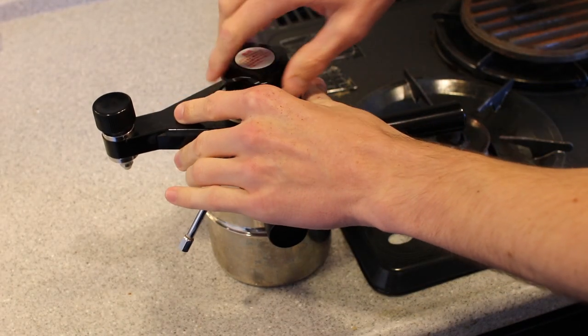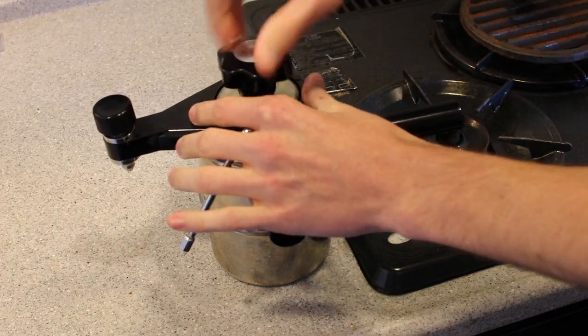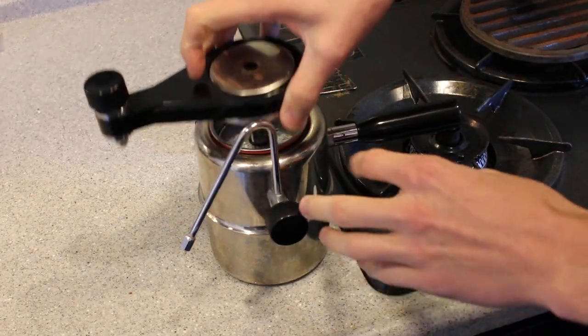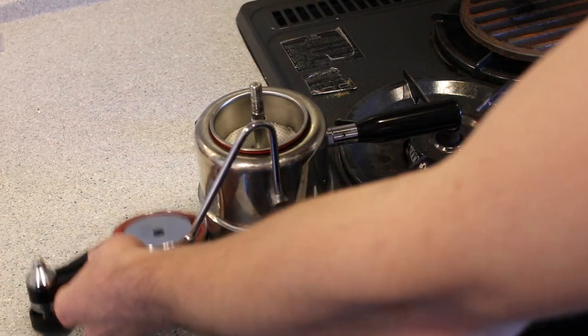Firstly, dismantle your machine and essentially forget about the reducer attachment inside the basket. Because of its loose fit, it's only really useful for tamping.